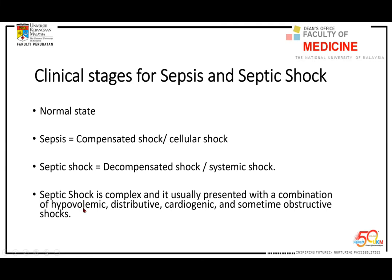I want to highlight this: septic shock is very complex and is usually presented with a combination of hypovolemic shock, distributive shock — which is the well-known component of septic shock — cardiogenic shock, and sometimes obstructive shock. Obstructive shock can be due to pericardial effusion, or abdominal ascites compressing the chest. So all of this contributes to septic shock — septic shock is not only distributive shock.